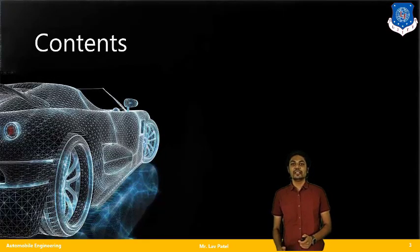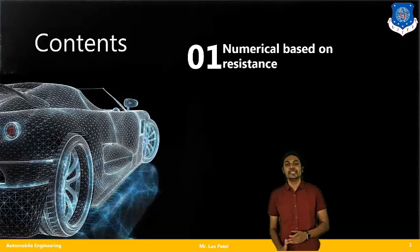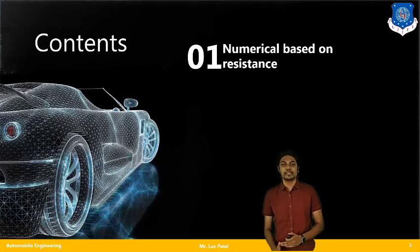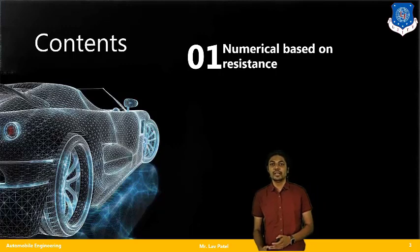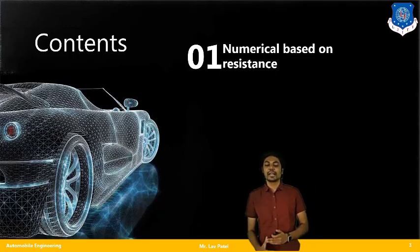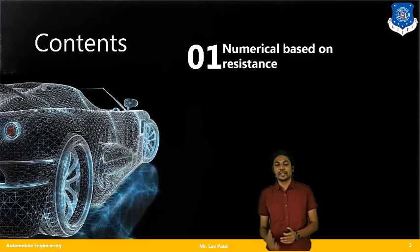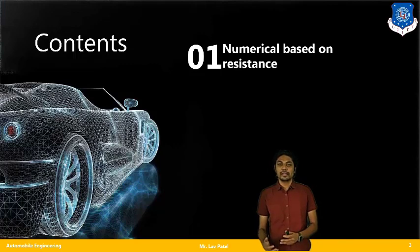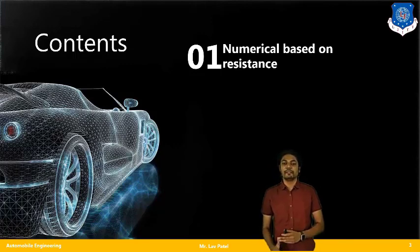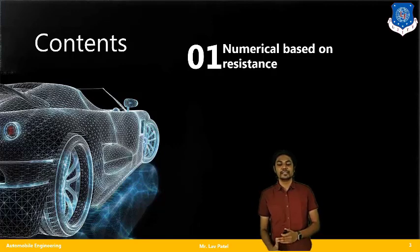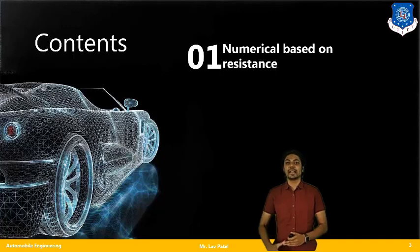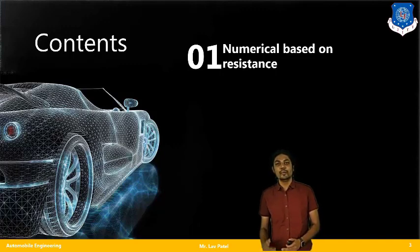In today's lecture we will look at a numerical based on different resistances while the vehicle is in motion. We know there are several forces acting upon a vehicle — due to the road gradient, and different air velocities at different speeds giving different air resistance. So air resistance and rolling resistance are among the multiple resistances applied on a vehicle while it is moving.